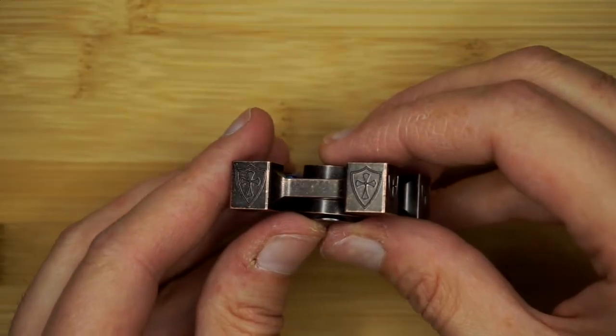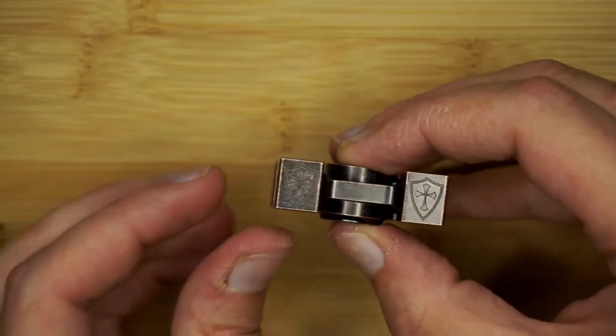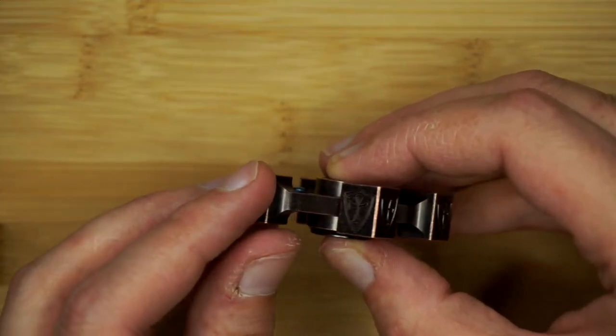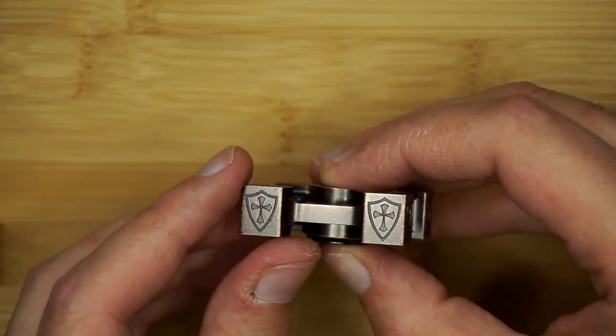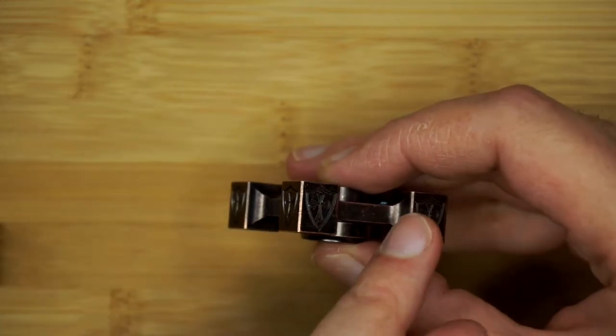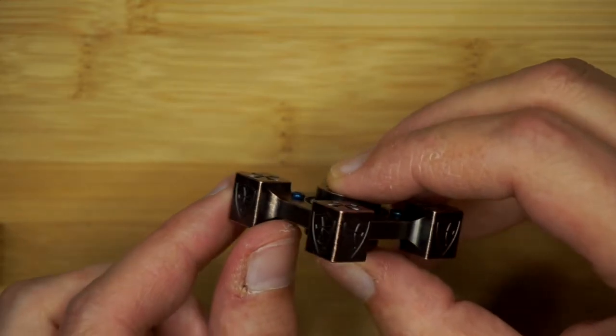Taking a look at the glyphs on here you've got the shield with the cross. This is on each one. They do have another spinner as well that has basically the plain card symbols. You can see some machining marks on here from the CNC.